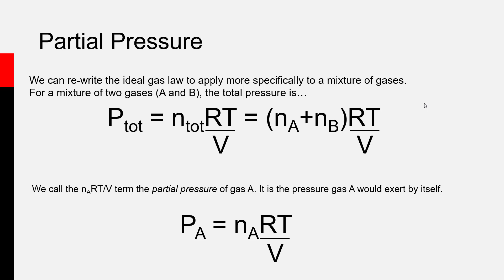Why does that work? The idea is that a gas exerts a pressure or fills a volume at a specific temperature not based on which chemical it is, but how much there is in terms of moles. The chemical identity of a gas doesn't matter if you want to predict its pressure or volume at a specific set of conditions, as long as it's not actively reacting with other chemical species, which would change the amount of gas you have.